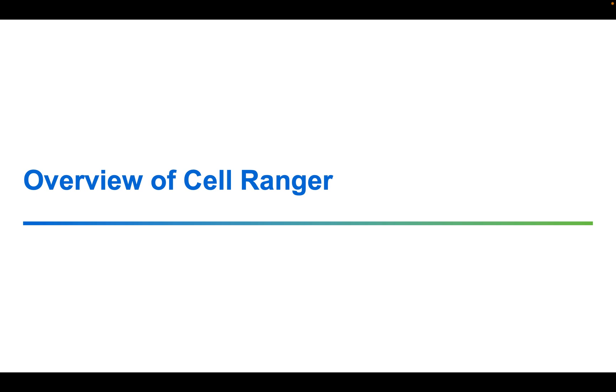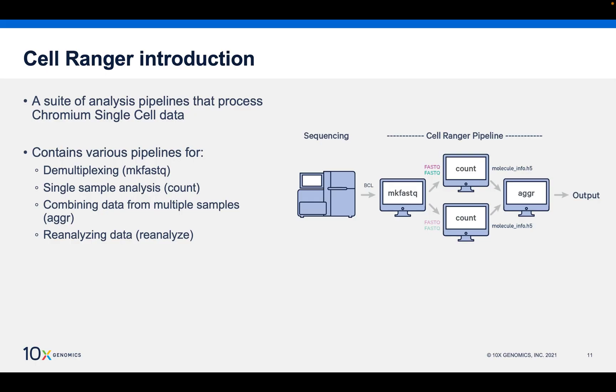Let's talk about CellRanger in more detail. Please recall, if you are following along with the workshop, it is the program running under the hood of 10x's cloud analysis platform. CellRanger consists of various pipelines or programs, such as MakeFastQ, which is used to demultiplex your sequencing data and generate sample-specific FASTQ files; Count, which takes in the FASTQ files and quantifies gene expression; Aggr, which aggregates or merges count data; and Reanalyze, which enables you to reprocess your data adjusting some parameters.